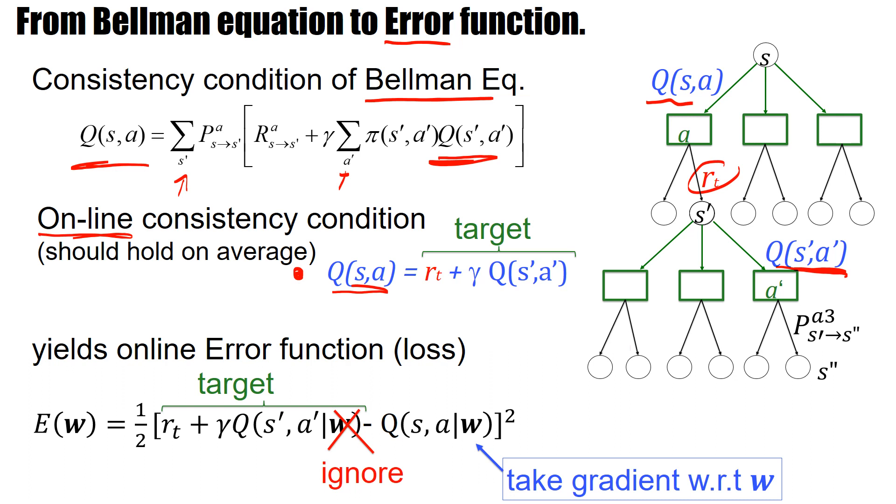So this is an ad hoc trick to stabilize this error function, which is statistically not completely correct. We work in an online setting and it becomes slightly more stable if we only take the gradient with respect to the Q value up here, this Q value. And that's why Sutton and Barto in that book, they call it a semi-gradient. You only take the gradient with respect to the Q value that you really want to change.